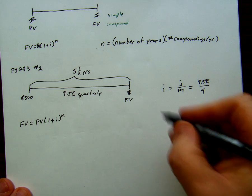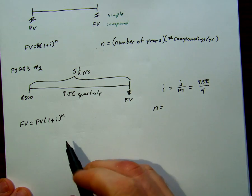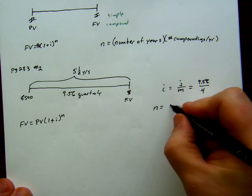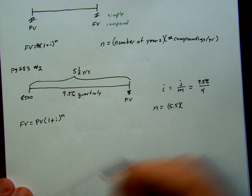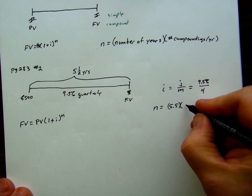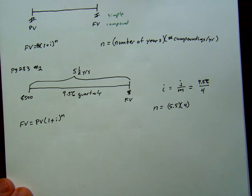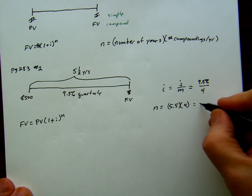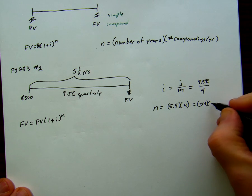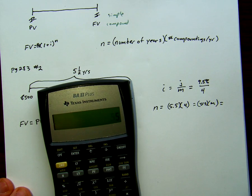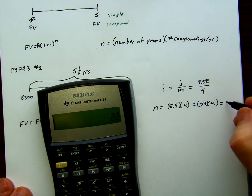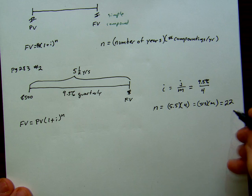We still need our n. We know our n is equal to number of years. We said this was five and a half years, so 5.5 years times the compoundings per year, m. So 5.5, four times a year, 5.5 times four, this is 22 quarters.